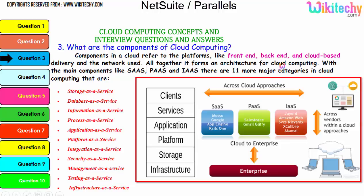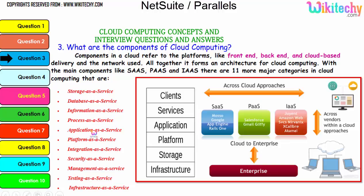Altogether, it forms an architecture for cloud computing. With the main components like Software as a Service, Platform as a Service, and Infrastructure as a Service, there are 11 major categories in cloud: Storage as a Service, Database as a Service, Information as a Service, Process as a Service, Application, Platform, Integration, Security, Management, Testing, and finally Infrastructure. These are all additional services associated with the three major services to form cloud computing.